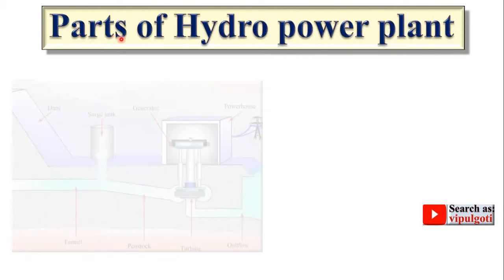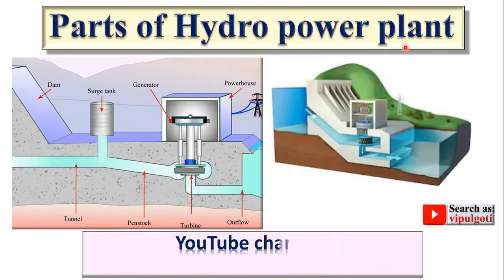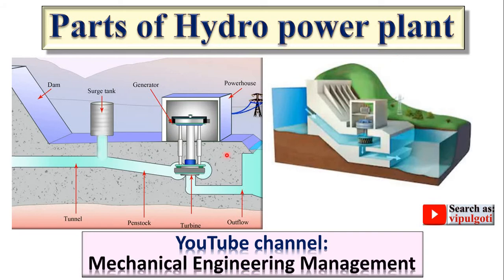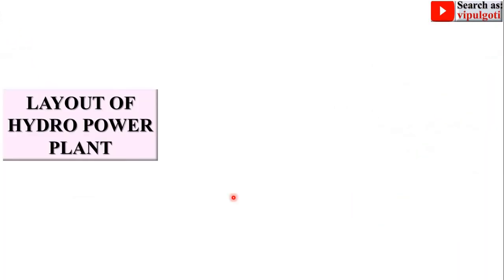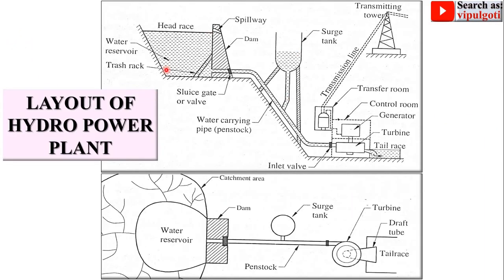Today I am going to teach you parts of a hydro power plant, sometimes called components of a hydro power plant. These are two figures of the hydro power plant. In this video we are going to see all these parts. Look at the layout — this is the front view and this is the top view of the hydro power plant. This figure is very important for the exam. You can draw this figure in the examination.